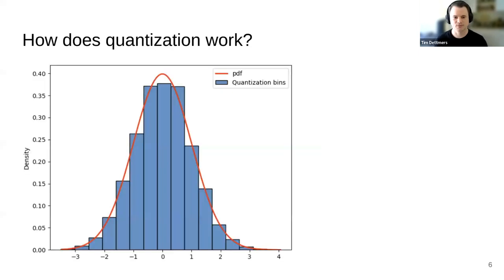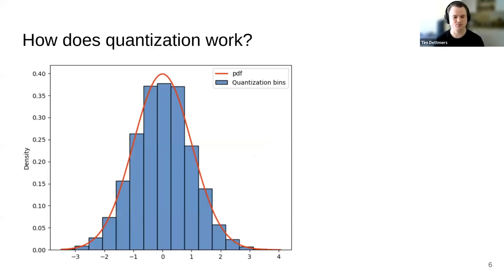Before I jump into all these papers, I want to give a little bit of background about quantization. Quantization is when we take a floating point or real representation and quantize into buckets. That's very similar to histogram binning. Here you have a histogram of a normal distribution with 16 bins — that's basically a 4-bit quantization.